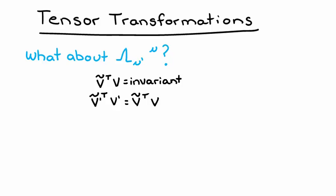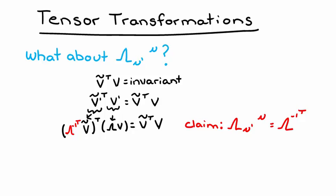In other words, v prime twiddles transpose v prime equals v twiddles transpose v. v transforms to v prime via the matrix lambda, as we've defined previously. And we're looking for this matrix that transforms v twiddles to v twiddles prime. I'll state that this matrix we're looking for is lambda inverse transpose. And here's why. Transposing this first quantity in parentheses yields v twiddles transpose lambda inverse lambda v. Lambda inverse times lambda is the identity, which is trivial and hardly ever written. This then gives us v twiddles transpose v, which is equal to the right side of the equation.